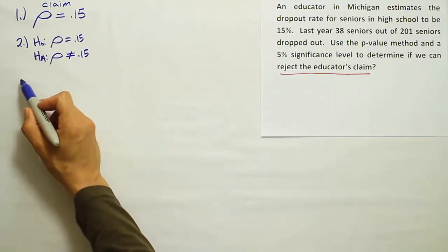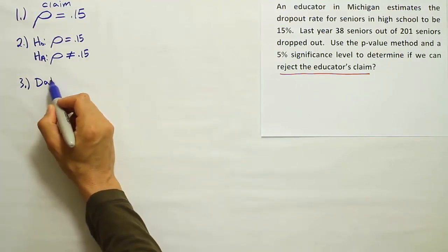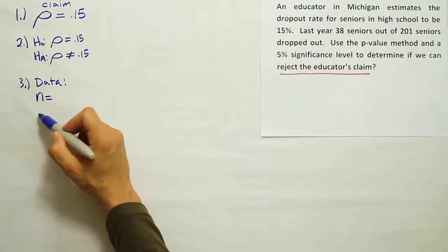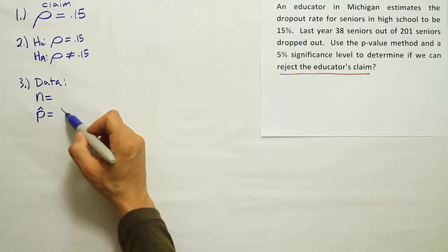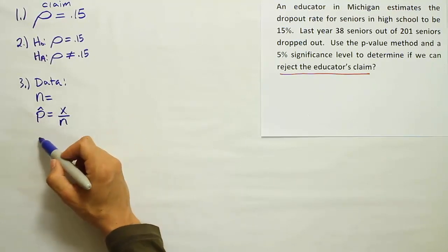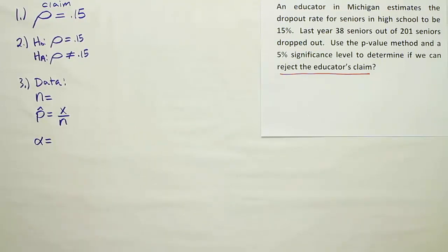Alright, the next step is to come up with the data from the word problem. So let's list all the data from the word problem. In problems about the proportion, we're usually given an N. We have to get P-hat from the problem, or we have to be able to calculate it by using the formula X over N. And then we're always given a significance level. If it's not provided, we'll choose 5%. So either way, we have it one way or the other.